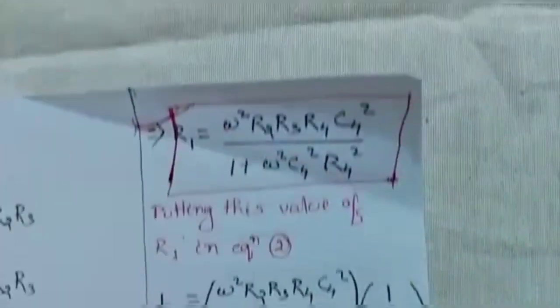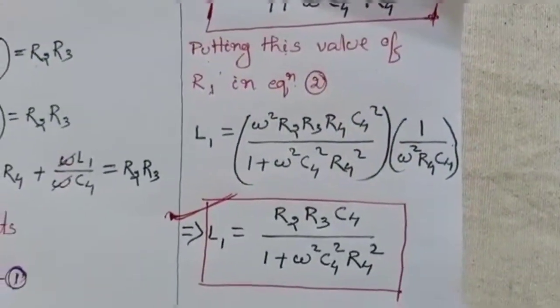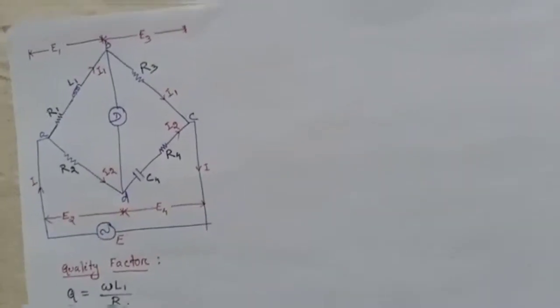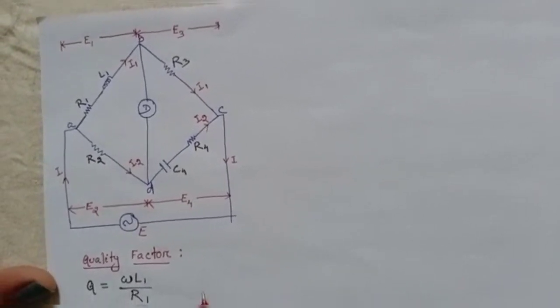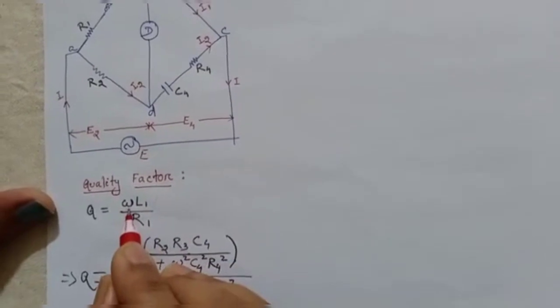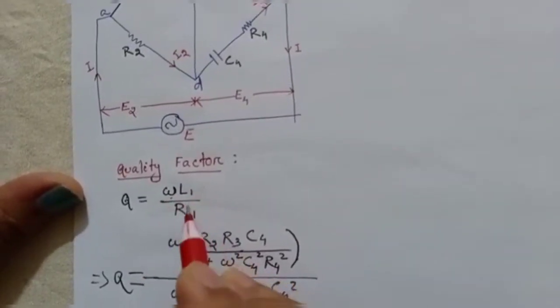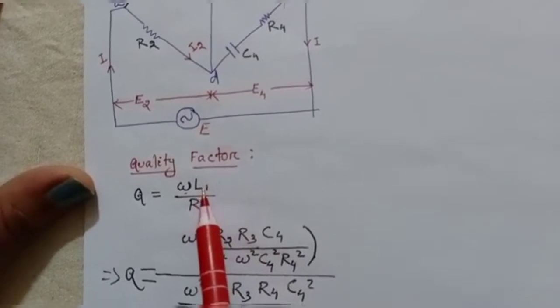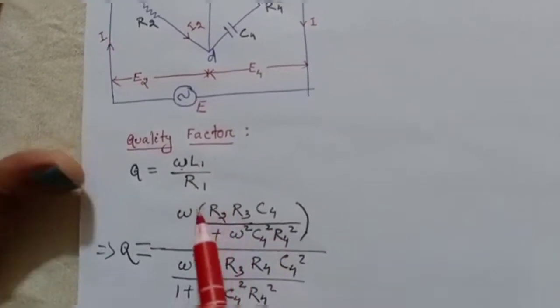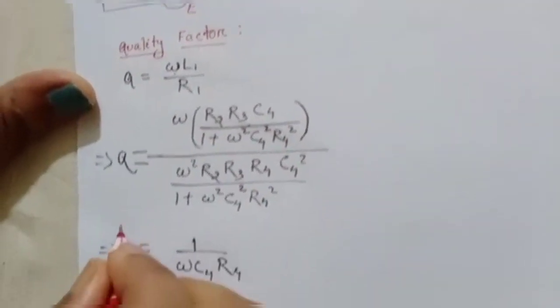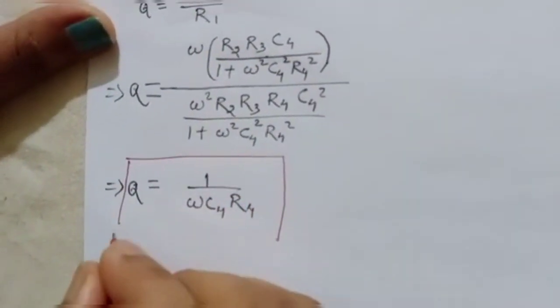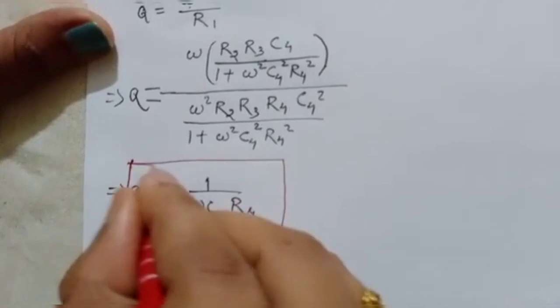Now we discuss why Hayes bridge is used for measurement of high Q coils. The quality factor formula for an RL circuit is Q = ωL/R, or here Q = ωL1/R1. Putting the values of L1 and R1 found from the balance condition into the Q factor equation, we finally get Q = 1/(ω·C4·R4).